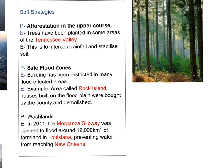The next soft strategy is safe flood zones, where building is restricted in some flood-affected areas. Our example here is an area called Rock Islands. The third strategy is washlands. In 2011, the Morganza Spillway was opened to flood around 12,000 kilometres of farmland in Louisiana to prevent water from reaching New Orleans. Essentially, a washland is an area that can be safely flooded without having too much impact on residential areas or farms.